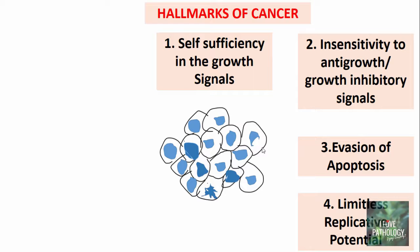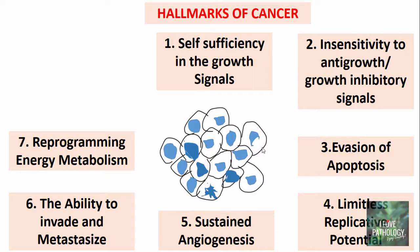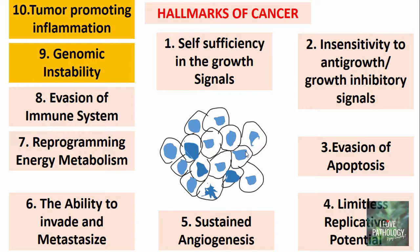The fifth hallmark is sustained angiogenesis — tumor cells cannot grow without a vascular supply, so they generate their own blood supply through angiogenesis. The sixth is the ability to invade and metastasize, characteristic of malignant neoplasms. The seventh is reprogramming of energy metabolism — there is a metabolic switch to aerobic glycolysis, resulting in synthesis of molecules needed for rapid cell growth. The eighth is evasion of the immune system. Additionally, two enabling factors accelerate cancer: genomic instability and tumor-promoting inflammation.